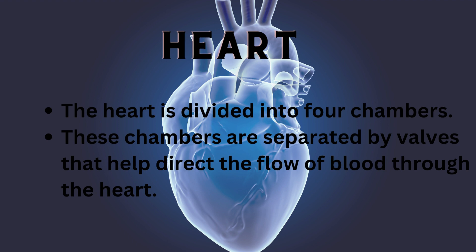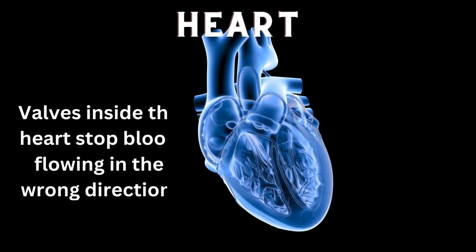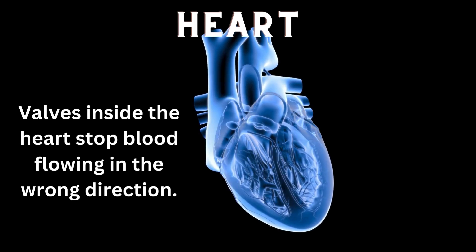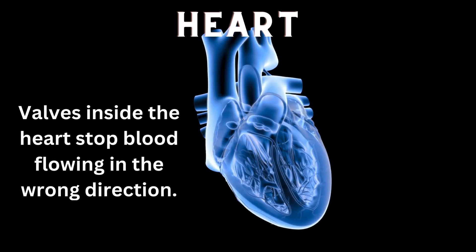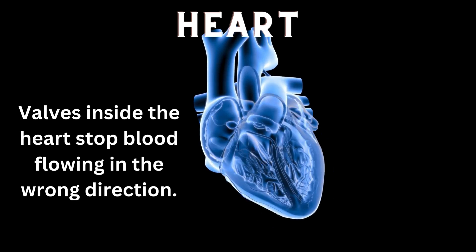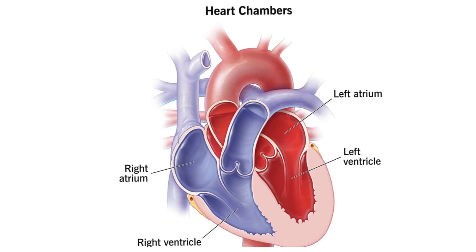The heart is divided into four chambers. These chambers are separated by valves that help direct the flow of blood through the heart. Valves inside the heart stop blood flowing in the wrong direction. The heart has its own blood supply, carried by the coronary arteries and coronary veins. The four chambers of the heart are right atrium, left atrium, right ventricle and left ventricle.